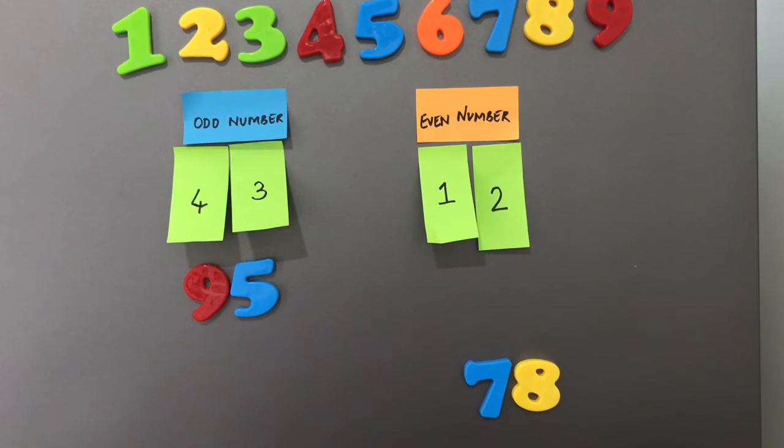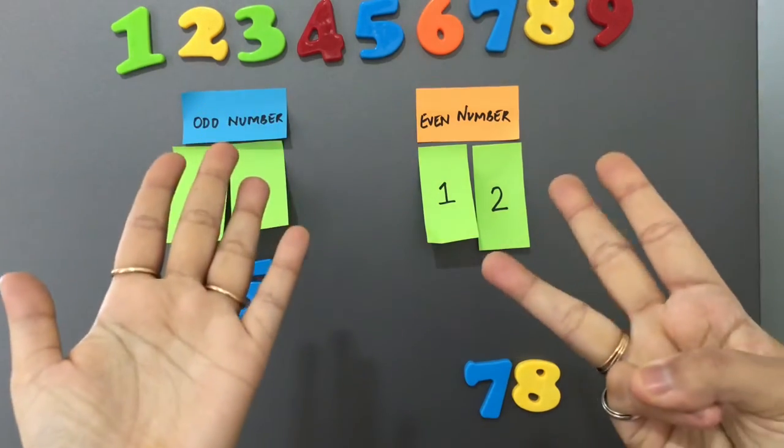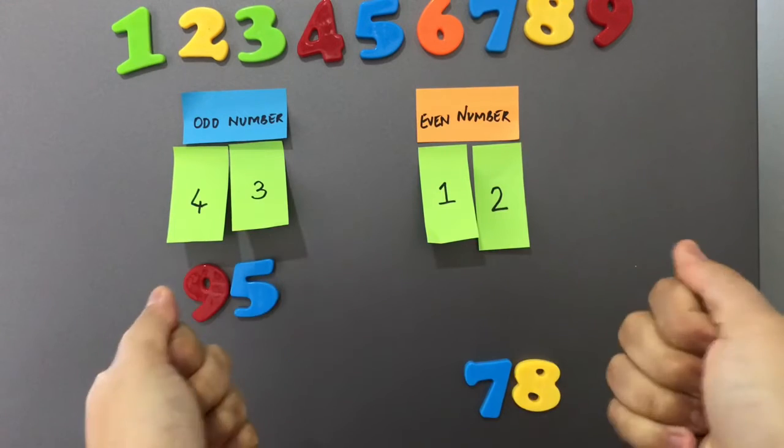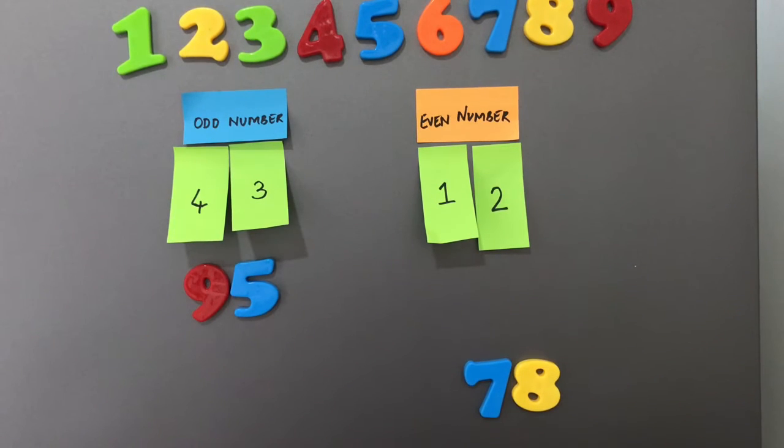Next we have seventy eight. So I take out eight fingers for my pairs. No finger left alone without a buddy. So seventy eight becomes our even number.